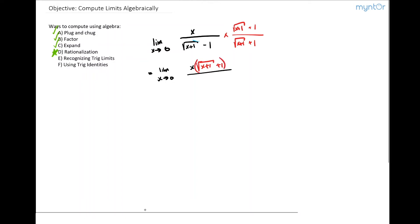let's combine these two bottom terms, and we get x plus one minus one. You can simplify this.